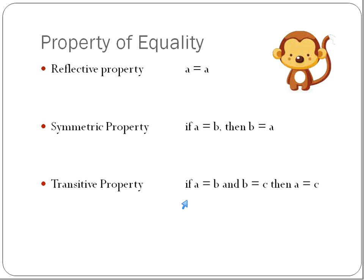And then the transitive property, which you'll hear talked about quite a bit because it sounds confusing. But all it is, is it's kind of like eliminating the middleman. If A is B and B is C, then A is equal to C. So if A is equal to 3 and 3 is equal to C, then A is equal to C. It's essentially like taking one step out of the whole process. If A is equal to something and C is also equal to that something, then they're both equal to each other.